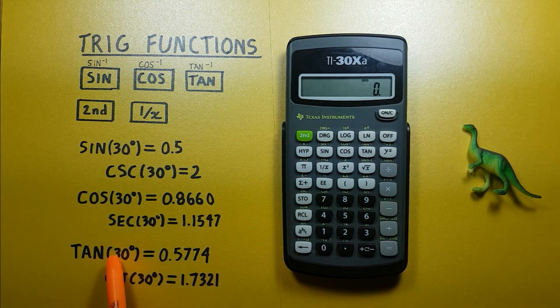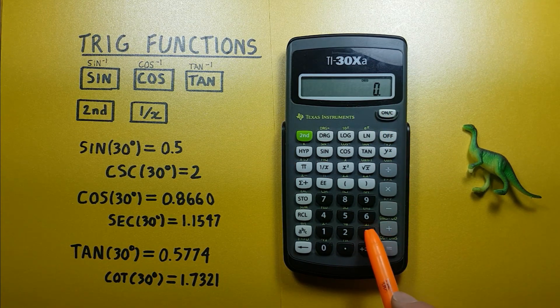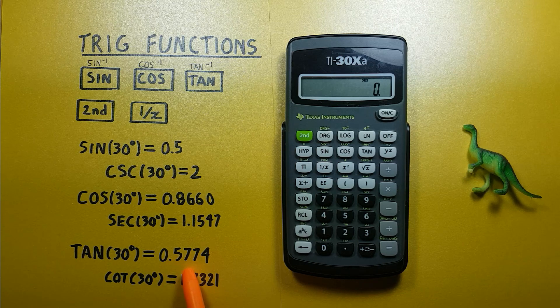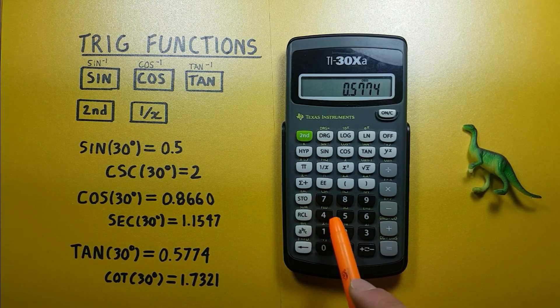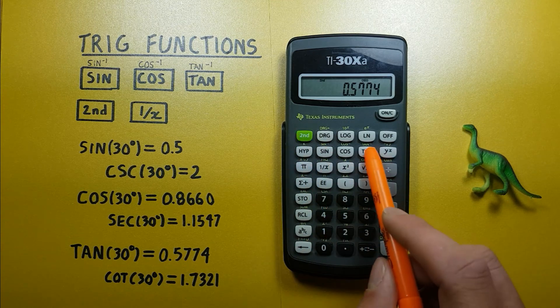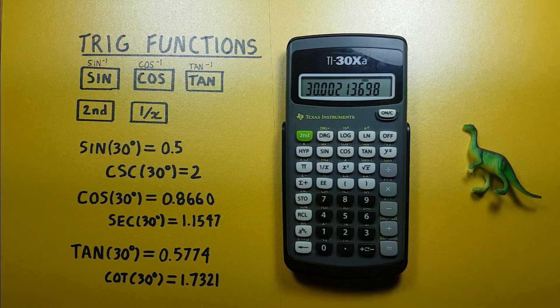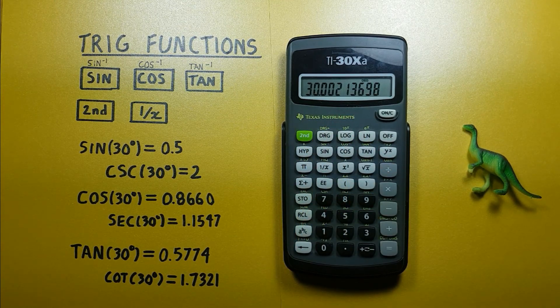And for arctan, again remember we got 0.5774, so 0.5774, second function tan, and again we get what would round to 30 degrees.